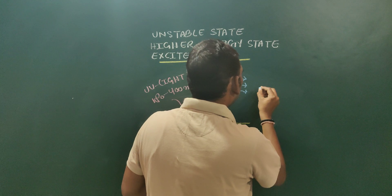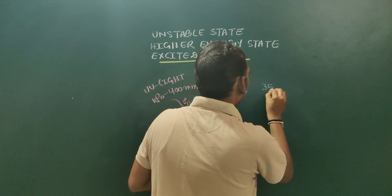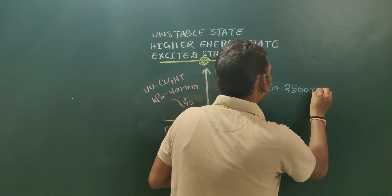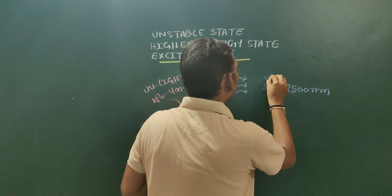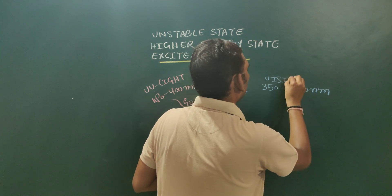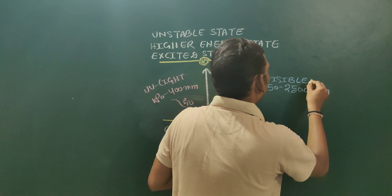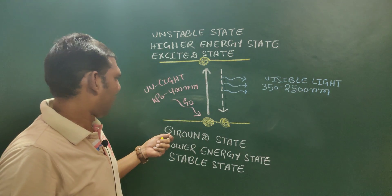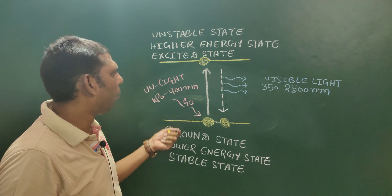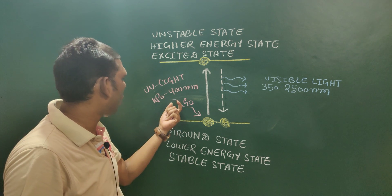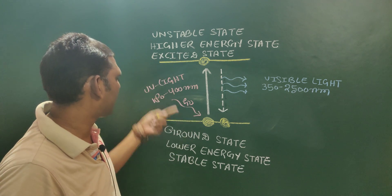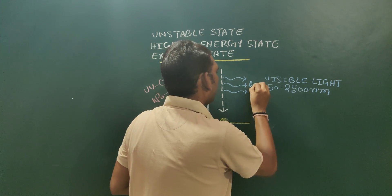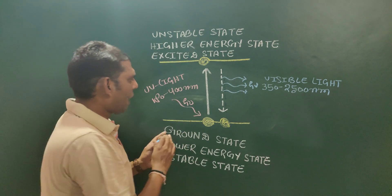When coming back from the excited state to the ground state, the molecule emits radiation having a wavelength of 350 to 2500 nanometers — this is the wavelength of visible light. The molecule emits radiation of longer wavelength, hν.